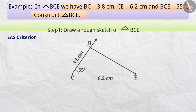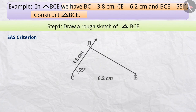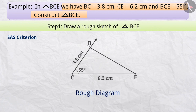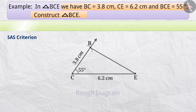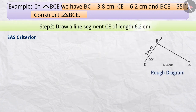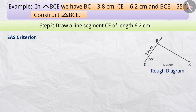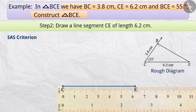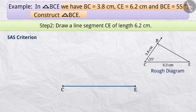Step 1: First, we draw a rough diagram with the given measures. This helps us to determine the procedure in construction. Step 2: Next, draw a line segment CE of length 6.2 cm.